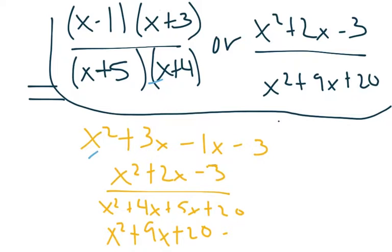Finally, we're finishing up right here. This is our final answer: x minus 1, x plus 3, over x plus 5, x plus 4.